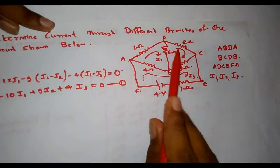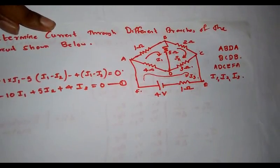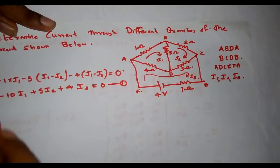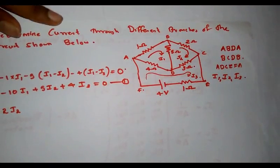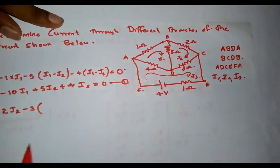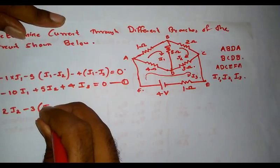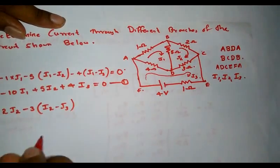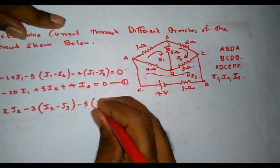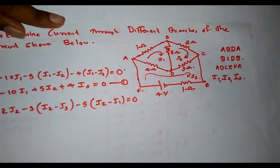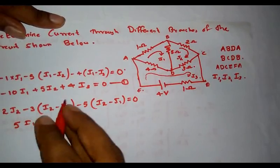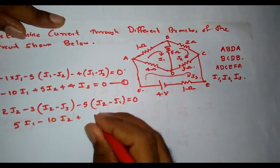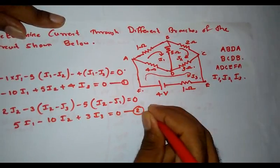Next I am considering the second loop, B-C-D-B, with current I2. Starting from the 2 ohm resistor: minus 2·I2. Only I2 flows through the 2 ohm resistor. The net current through the 3 ohm resistor is I2 minus I3, and the net current through the 5 ohm resistor is I2 minus I1, all equal to 0. Simplified: 5·I1 minus 10·I2 plus 3·I3 equals 0. This is equation 2.